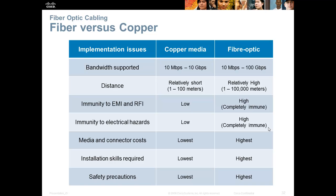This chart compares fiber optic versus copper. Copper can go between 10 megabits and 10 gigabits per second, while fiber optic can reach up to 100 gigabits per second. Copper is limited to 100 meters, while fiber optic can go 100,000 meters. Fiber optic is immune to interference and has no electrical hazards. The downsides of fiber are higher cost to implement, specialized training required, and higher safety precautions due to chemicals used in splicing. If cost were no issue, everyone would use fiber, but copper remains very popular.